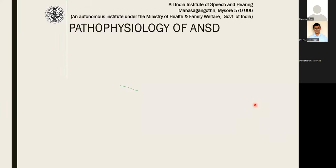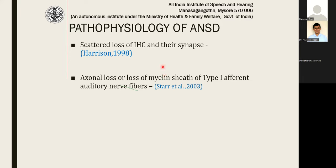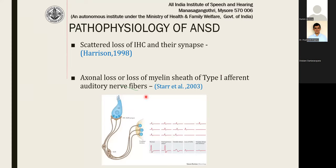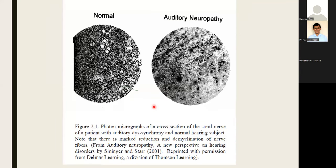Why do we get ANSD? As mentioned, the problem can be in the IHCs, at the synapse, or in the auditory nerve fiber, where there could be demyelination — myelin loss, sheath loss, and axonal loss — leading to auditory neuropathy spectrum disorder. This is a picture from an auditory neuropathy patient where you can clearly see a reduction in the myelin sheath. Because of that, the nerve fibers are not functioning properly, and that could be the reason for auditory neuropathy.